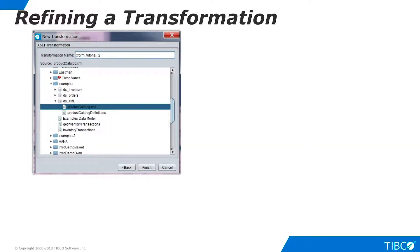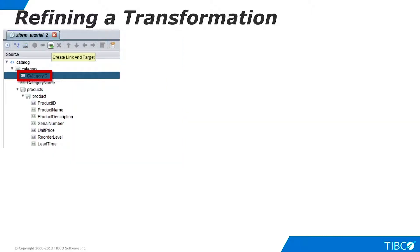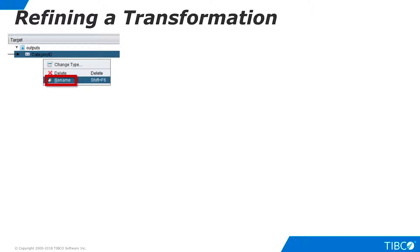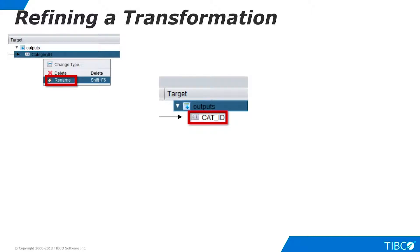In the previous example, we showed a quick and easy way to flatten an entire XML structure. Now let's look at some additional features of the XSLT transformation editor that will help us customize the transformation. Create a new transformation, name it, and once again select the ProductCatalog XML document from the Examples folder. Now select only the Category ID field and click Create Link and Target. Our output structure contains only the selected column. In the output target, right-click the new column and select Rename. You can change the output column name to anything you like.